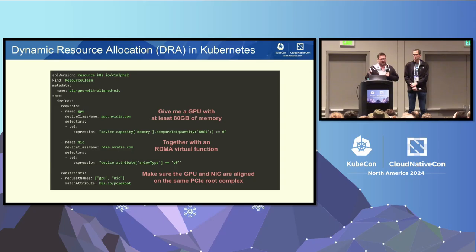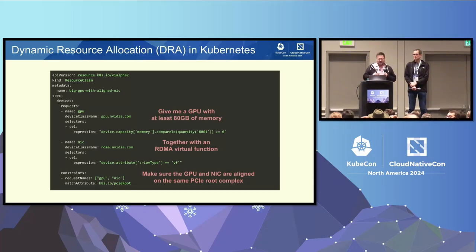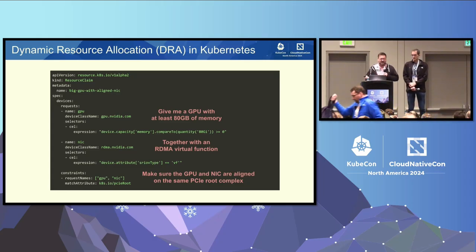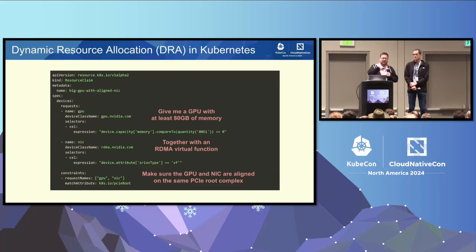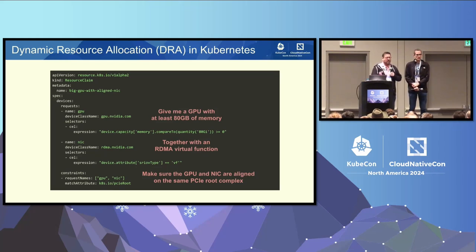With DRA, because we publish for each device — here's the GPU, here's the PCIe root it's attached to — we can even publish for NICs what network they're connected to within the broader topology. The expressiveness of the API is much higher. As a community we need to come up with some common attributes. Typically attributes are vendor-defined, but we want to define common attributes like PCIe root that can be used across drivers and vendors so that the scheduler, when picking devices, only chooses ones where the set meets the listed constraints.